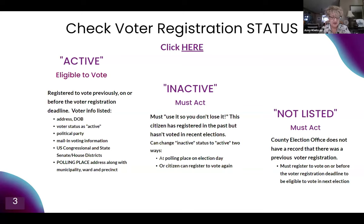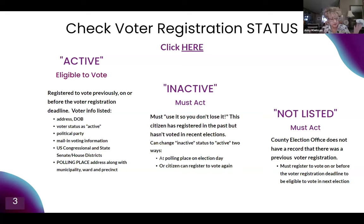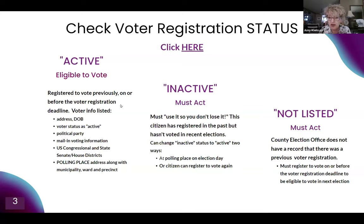Be advised there's a lot of misinformation around the purging of voter rolls right now. It actually takes two consecutive federal and state elections to purge someone from voter registration. If a person's registration is 'Not Listed,' there is no record at the county election office that they were ever a registered voter, and they need to register online or with a printed application before the registration deadline to vote in the next election.